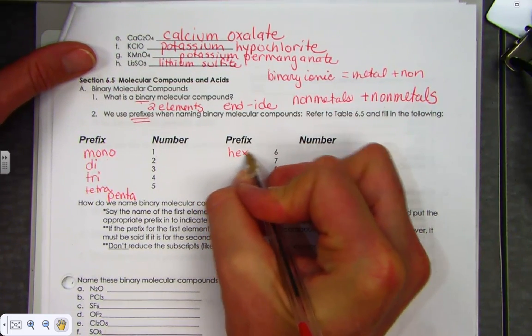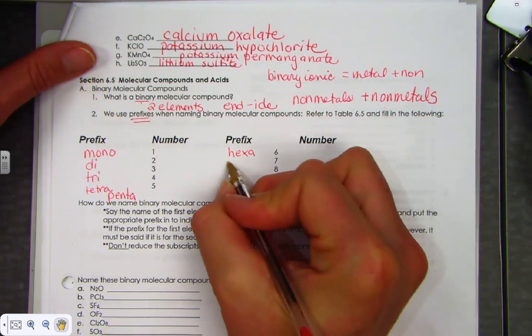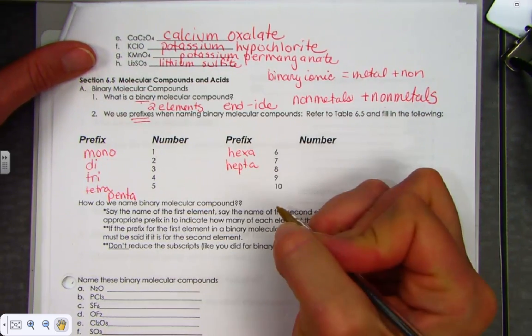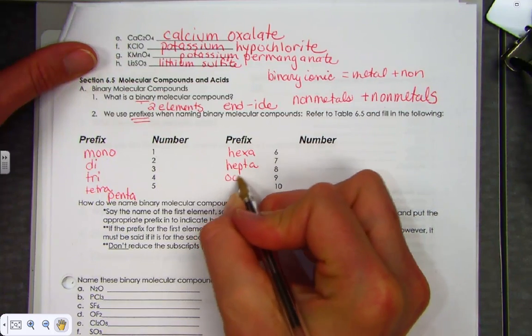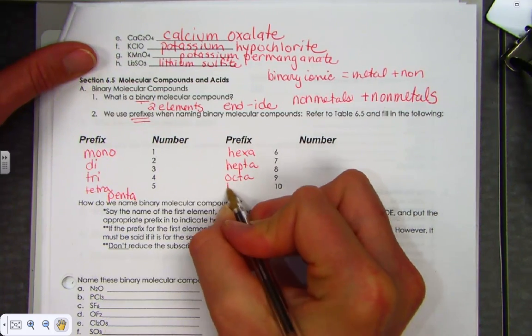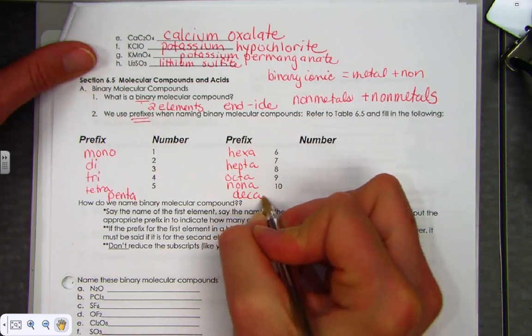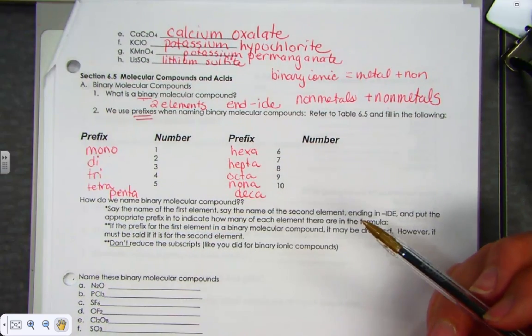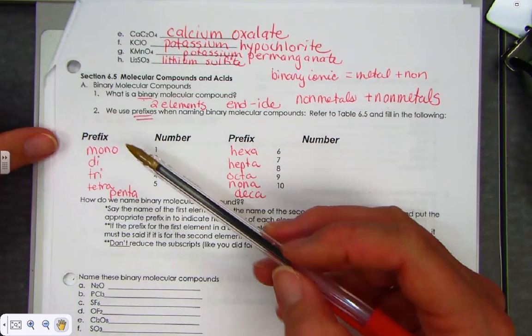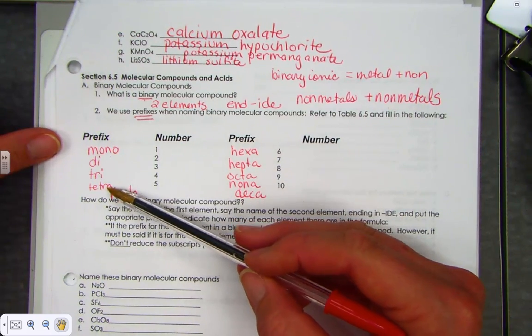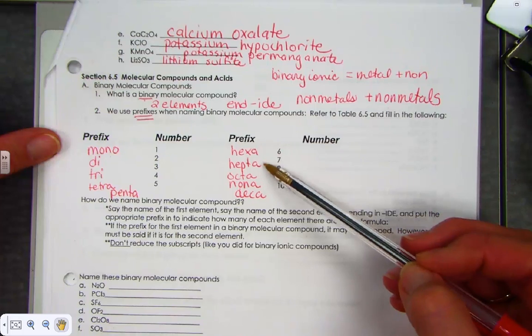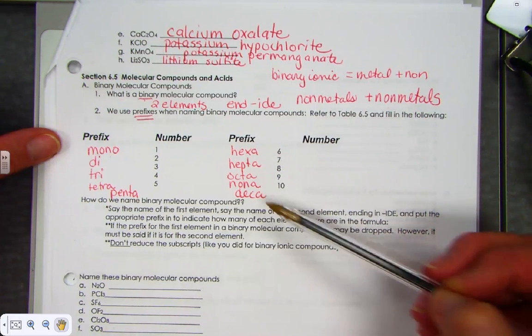The subscript six gets a prefix hexa. Seven is the prefix hepta. Octa for the number eight, nana for the number nine, and deca for the number ten. Counting chemistry style. Mono, di, tri, tetra, penta, hexa, hepta, octa, nana, deca.